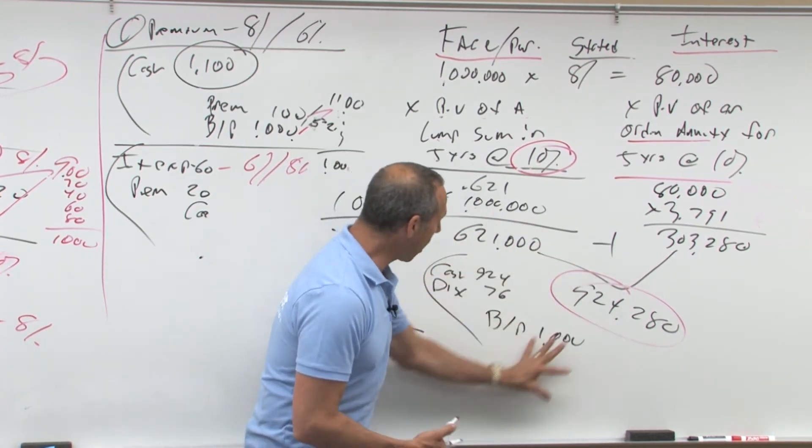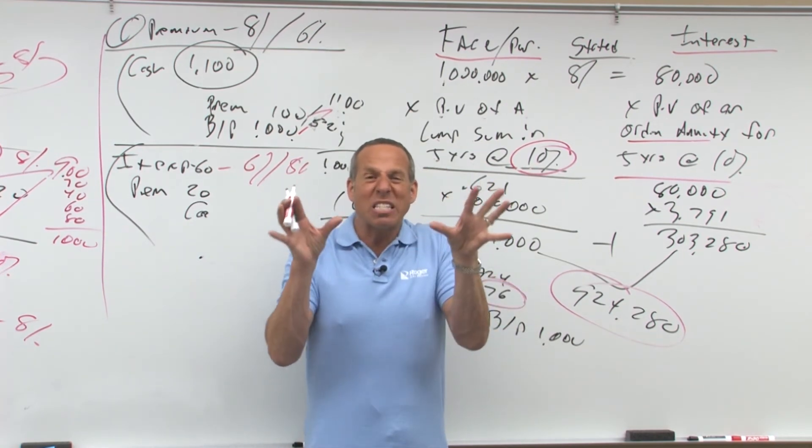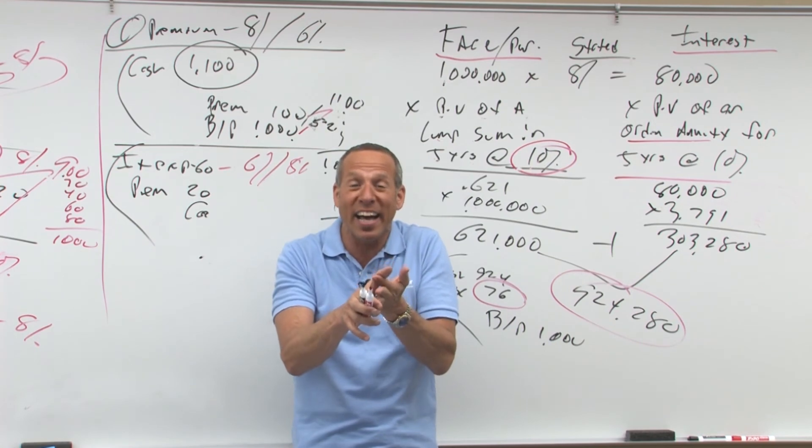That would be your journal entry to initially set it up. Then what do you have to do? Then we're going to have to take the concept, take this, and we're going to have to amortize out the discount. Earlier to keep it simple, KISS, keep it simple, stupid, KISS.